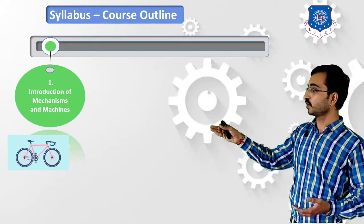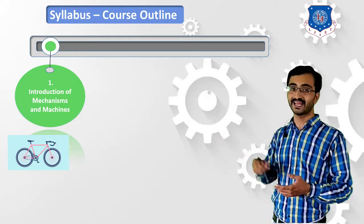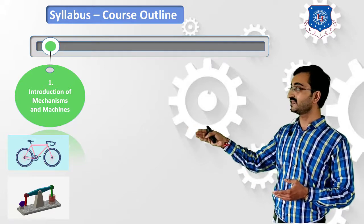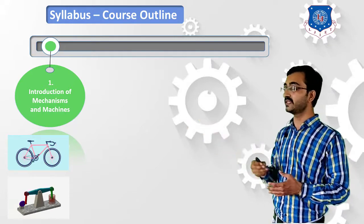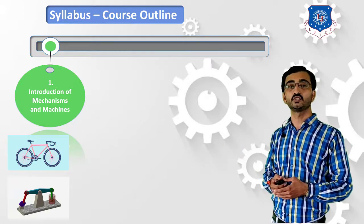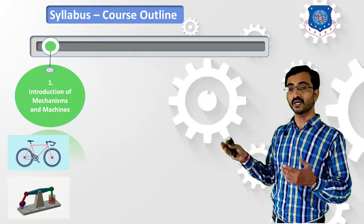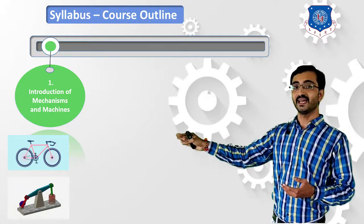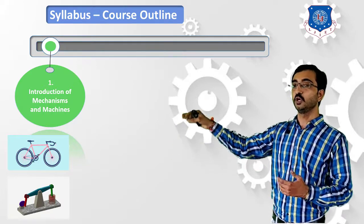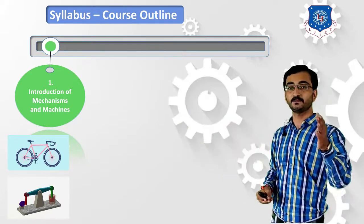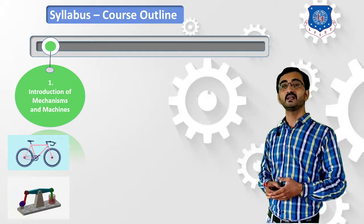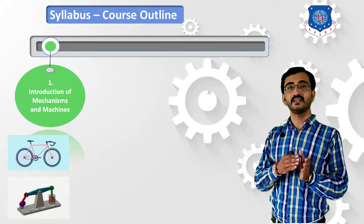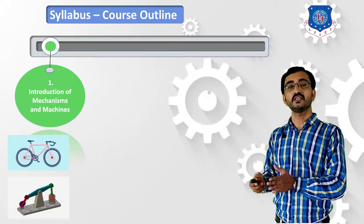We can term the bicycle a mechanism, and then we will understand machines — for example, a beam engine. This second image shows a beam engine, which is widely used for oil extraction. Here you can learn how we give input as complete rotation of the crank, and this complete rotation helps develop the reciprocation of the piston and cylinder. These are the basic examples of mechanisms and machines, and you will understand various kinds used in day-to-day life.